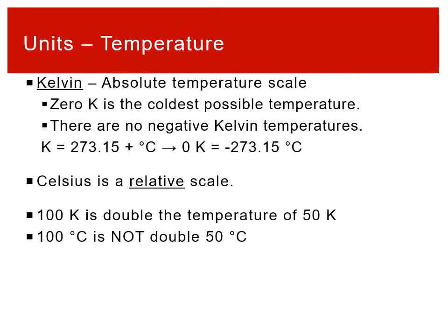The reason why is that Kelvin is what's called an absolute temperature scale. What that means is that zero Kelvin is the coldest possible temperature — there are no negative Kelvin temperatures. Temperature is about average motion, how quickly things are moving. So zero Kelvin corresponds to no motion. That's why you can't have negative Kelvin temperatures: that would be negative average kinetic energy, which is impossible. Zero Kelvin is the coldest possible temperature, and there are no negative Kelvin temperatures.